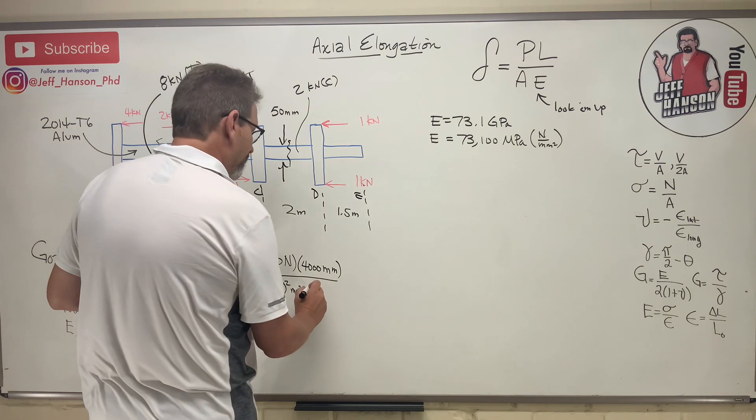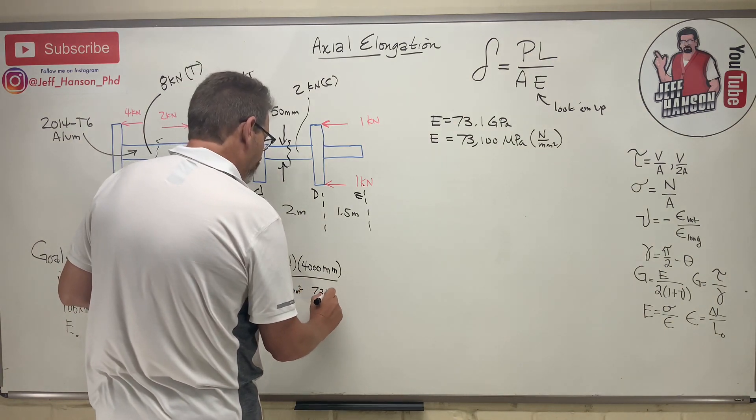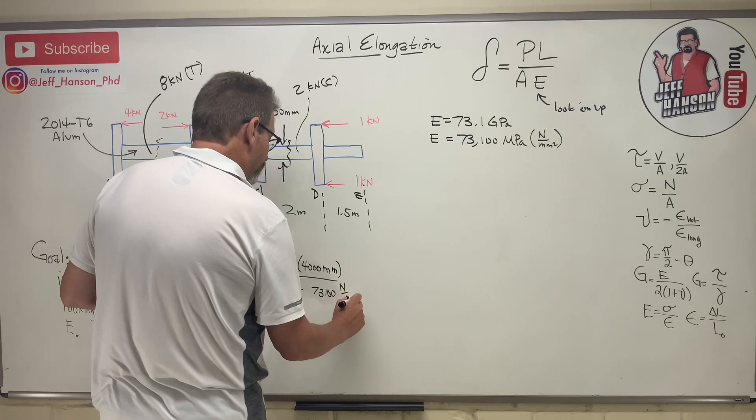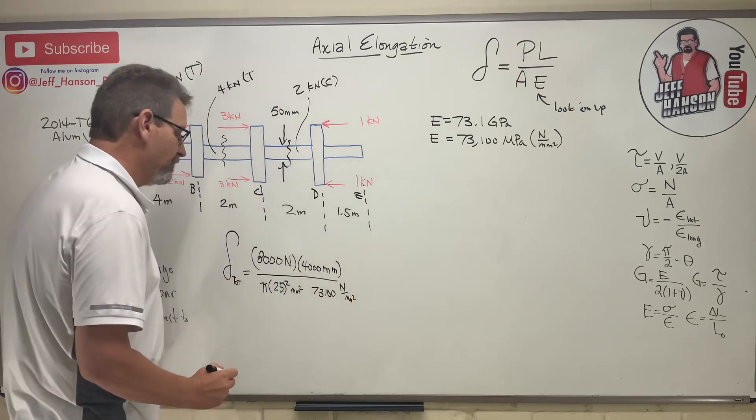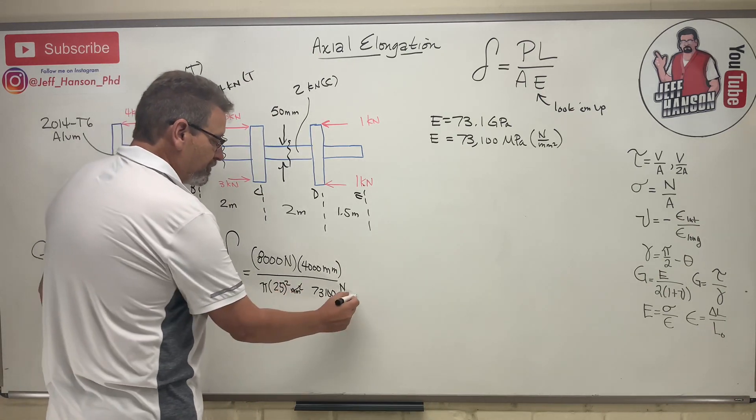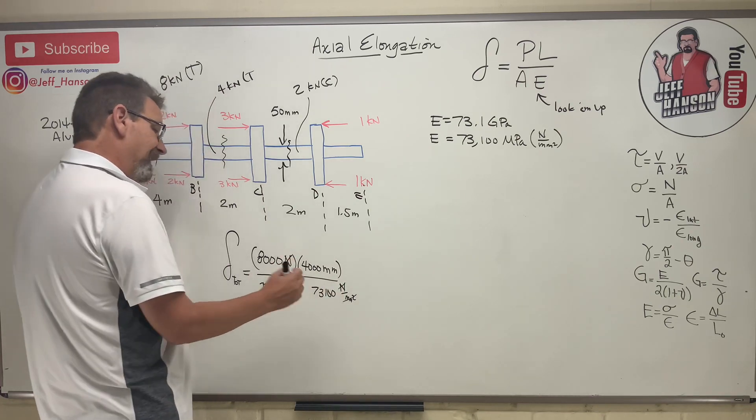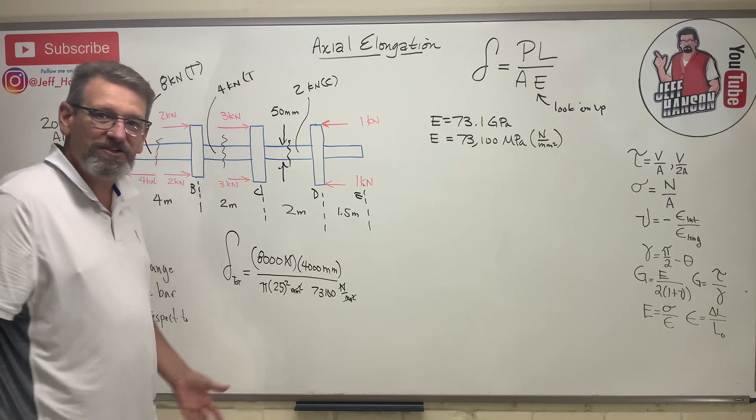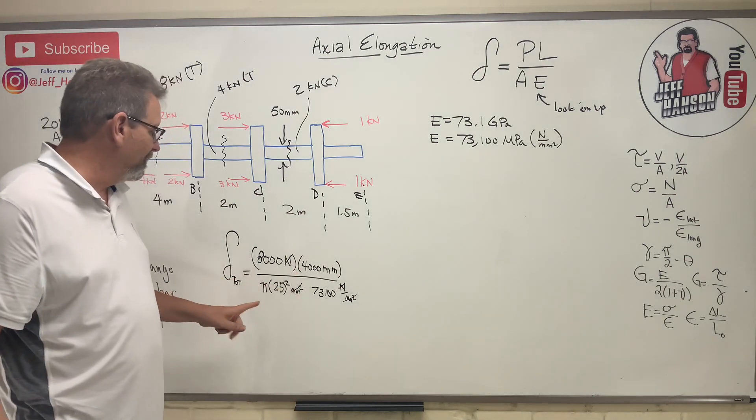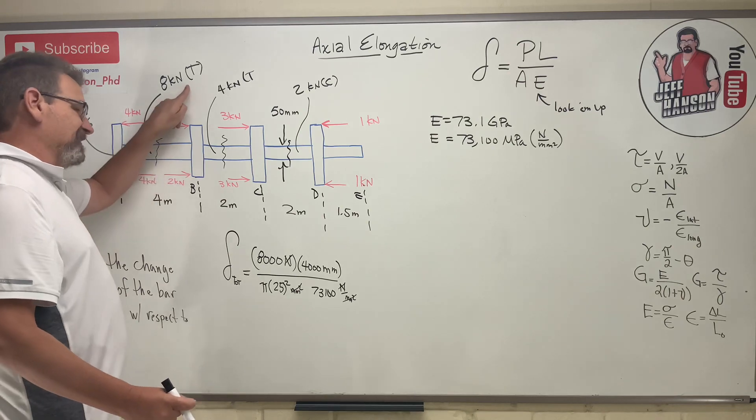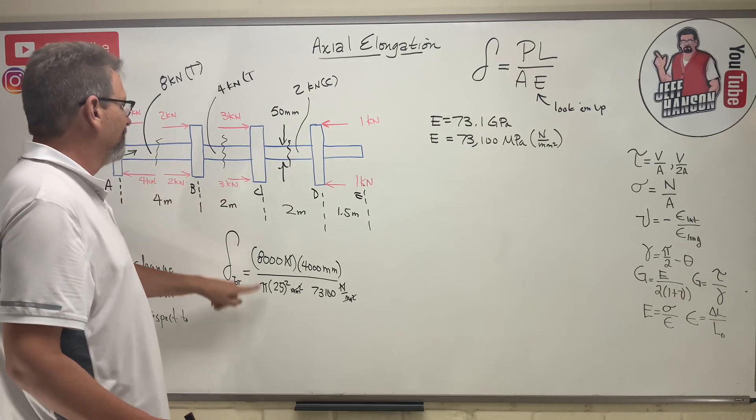And one more thing - I have E, and E is in - I'm going to use that megapascals - 73,100 Newtons over millimeters squared. Let's see what cancels out: millimeter squared cancels out, there's a Newton, there's a Newton, and I'm left with just millimeters. That's what I want. This section here is going to be stretching since it's in tension, so he's positive.